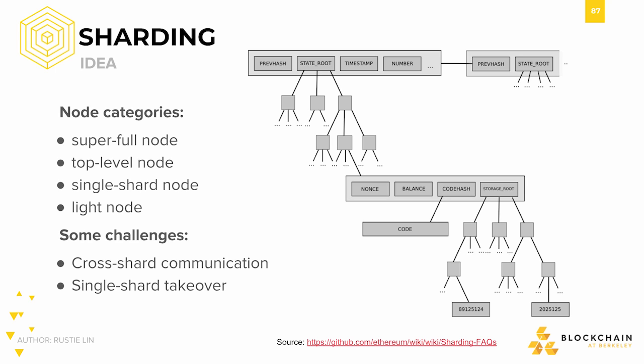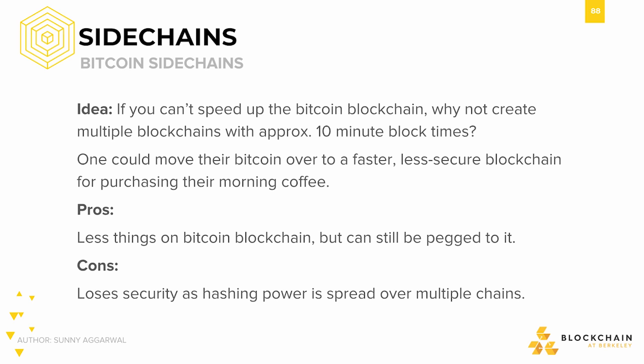For example, there's the issue of how we can share information correctly and succinctly between shards, and also the issue of how we can maintain correct operation if a single shard has been taken over. On a similar note, there's also the idea of creating sidechains. The idea is that if we can't speed up the main blockchain, why not create multiple side blockchains that serve different purposes? For example, in Bitcoin, we could potentially have a faster and less secure blockchain for small transactions, such as purchasing morning coffee. A benefit to this type of architecture is that we would lower the traffic on the main Bitcoin blockchain and could have sidechains for different transactions, but all still pegged to the main blockchain as an arbiter.